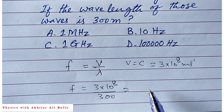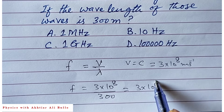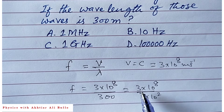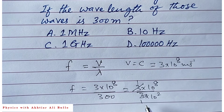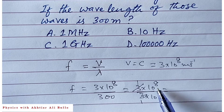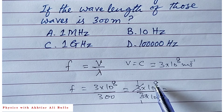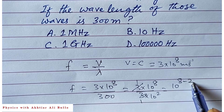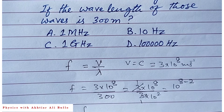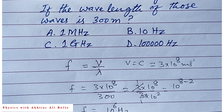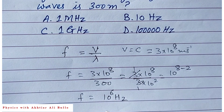We can write 300 as 3 × 10². The 3s in the numerator and denominator cancel, giving 1. Since the bases are the same, we subtract the powers: 10⁸ divided by 10² gives 10⁸⁻² = 10⁶. So frequency equals 10⁶ hertz.